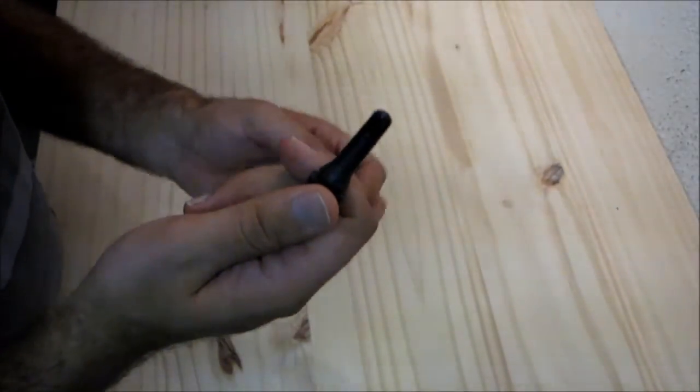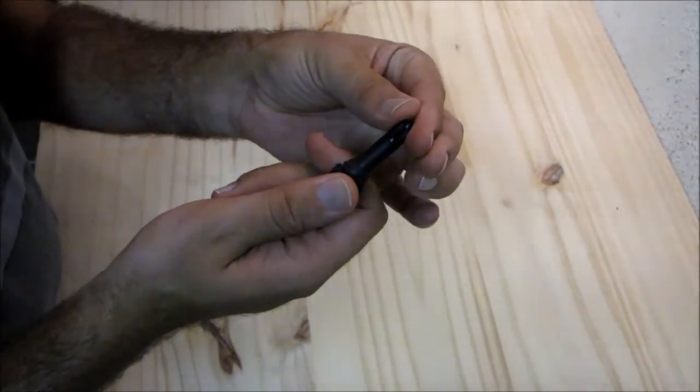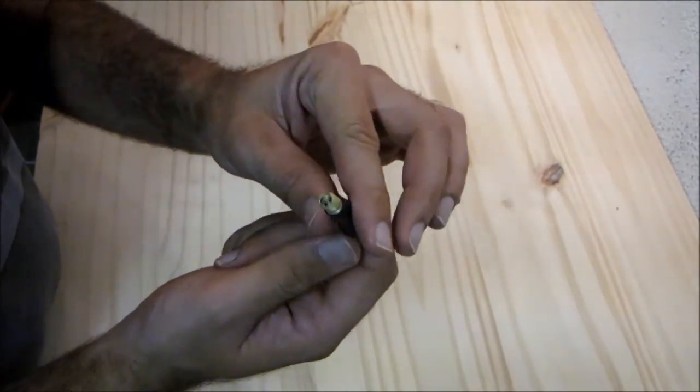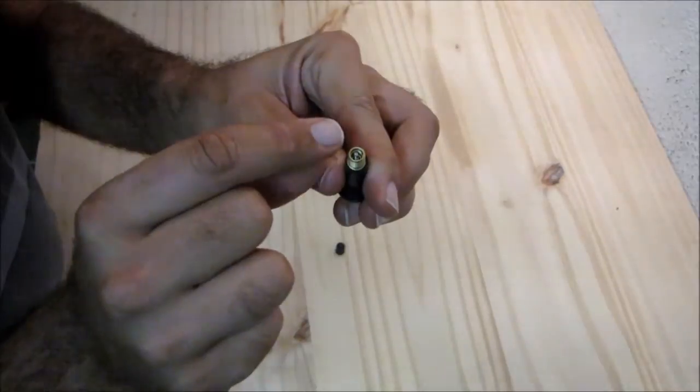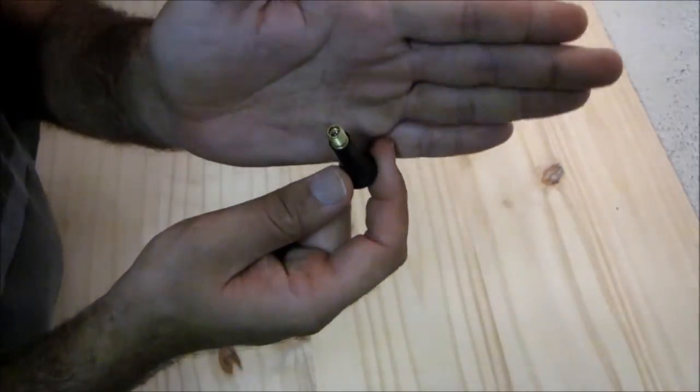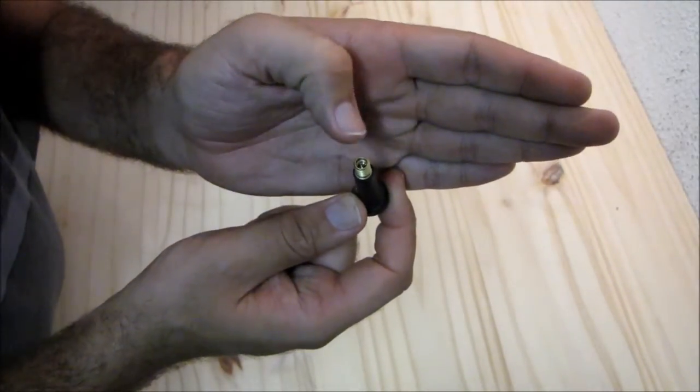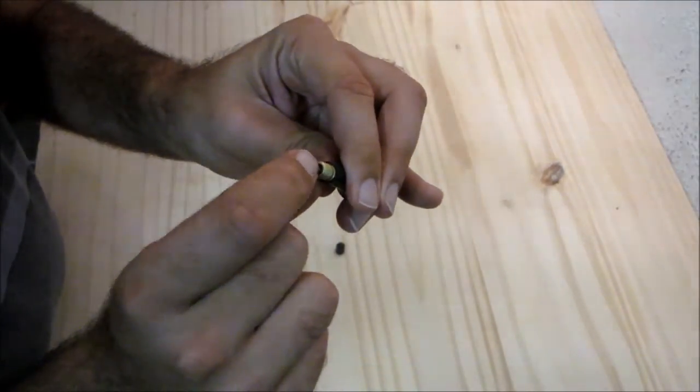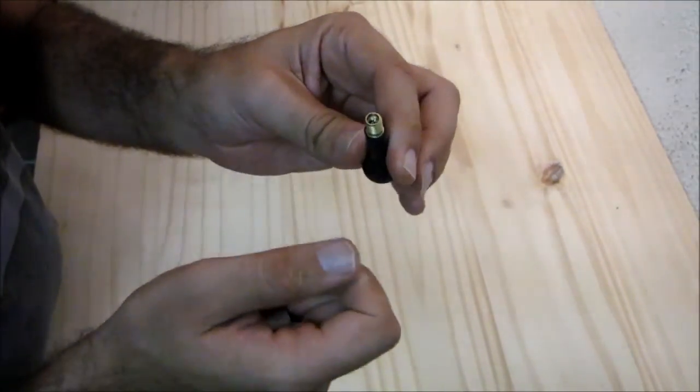Here's the Schrader valve I showed you earlier. So if we take the cap off of that one, that's what that looks like. There you can see the little pin. You can see the little pin on the inside which if you press it in on a normal car tire actually lets the air come out.